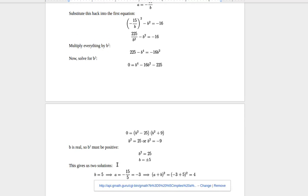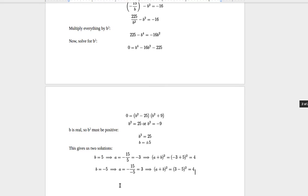If b equals 5, then a equals negative 3, a plus b is 2, and then 2 squared is 4. If b equals negative 5, then a is 3, a plus b is negative 2, and negative 2 squared is 4. So you get the same solution, but I think that this solution is a lot longer. But at the same time, it's more general.